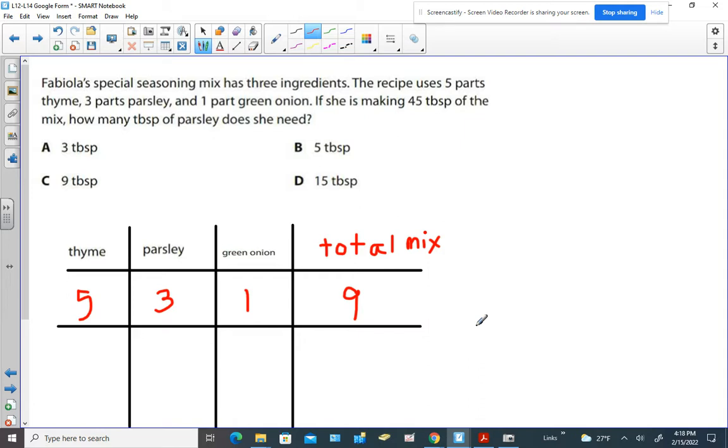Now the next thing we have to determine is where do we put this? Forty-five tablespoons of mix. So remember, we can think of parts as tablespoons as long as we keep everything proportional. So let's put the forty-five down here because that's total mix.